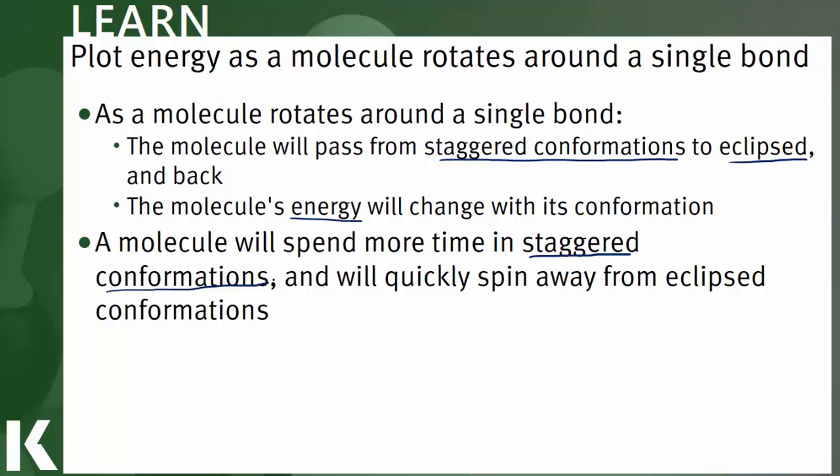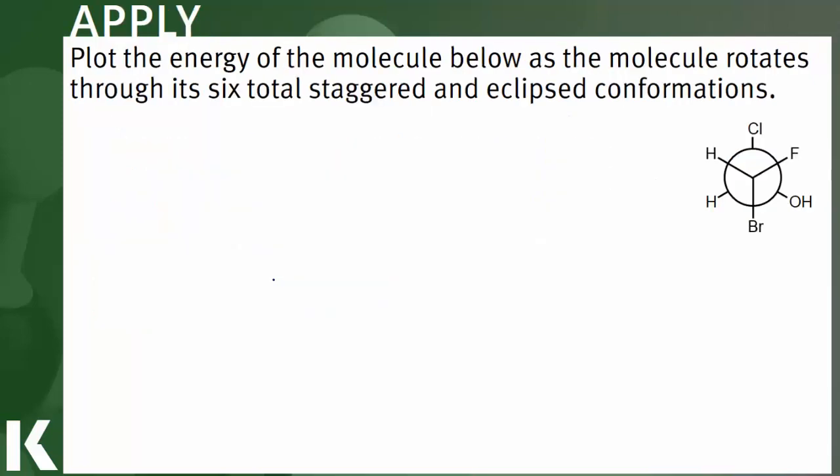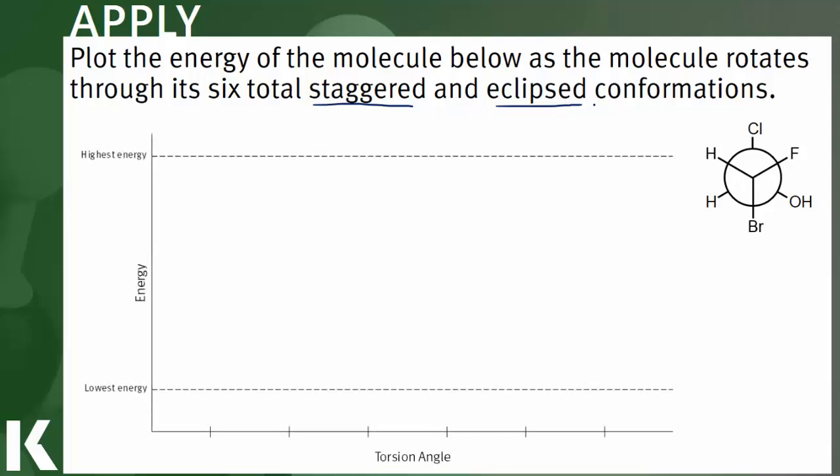Let's take a look at an example that ties all of these ideas together. In this example, we're asked to graph the energy of a molecule as it rotates through its six total conformations. That's three staggered and three eclipsed, and again, we're going to expect that it alternates staggered, eclipsed, staggered, eclipsed. So let's build a graph.